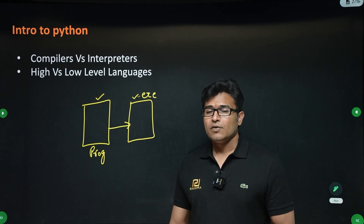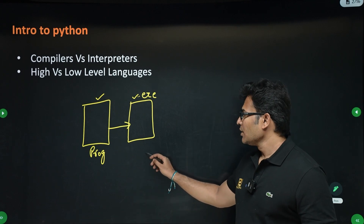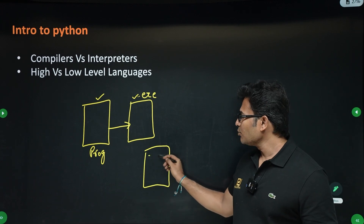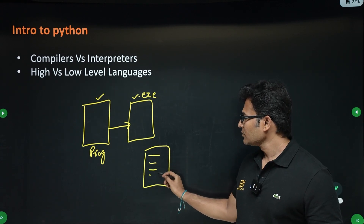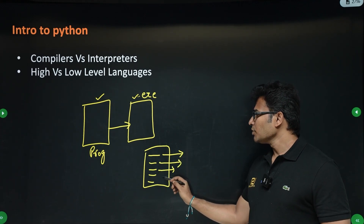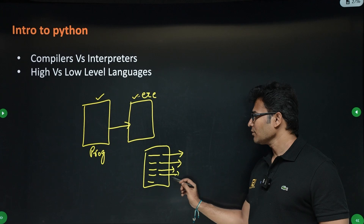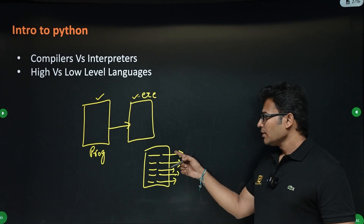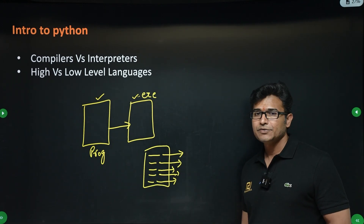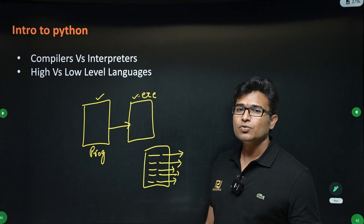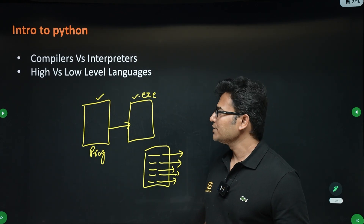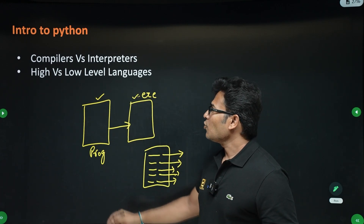What is an interpreter? An interpreter takes the program line by line and converts each line into executable code, one line after another. Therefore, an interpreter is literally slower compared to a compiler, because every time after every instruction you have to invoke the interpreter to transform the next line into executable code. That is the difference between a compiler and an interpreter.